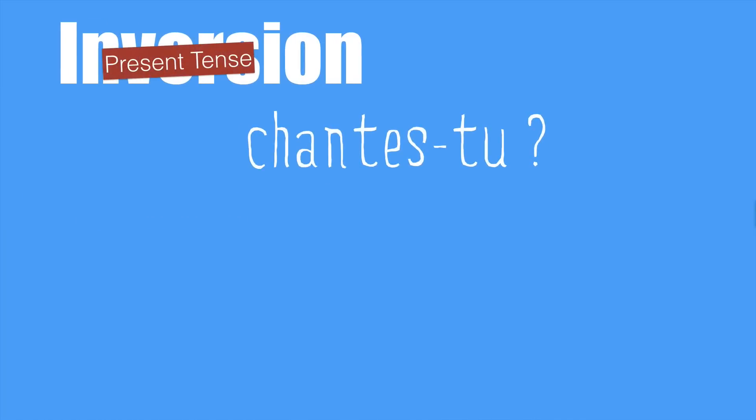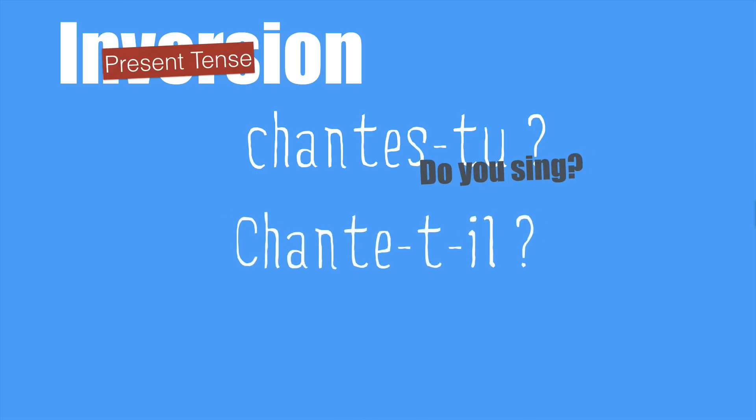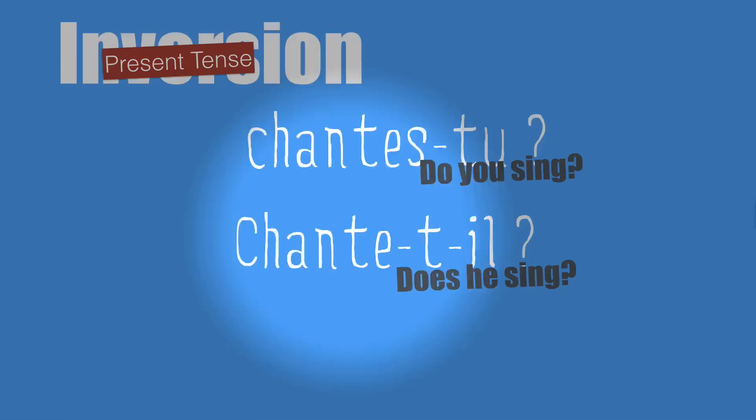Inversion in the present tense. So now you know this example: 'Chantes-tu?' Let's see the second one: 'Chante-t-il?' — Does he sing? Here, as you can see, there is something special: we add a T. This T has nothing to do with grammar; it's just to improve the pronunciation when you speak. And because we say it when you speak, we also write it.